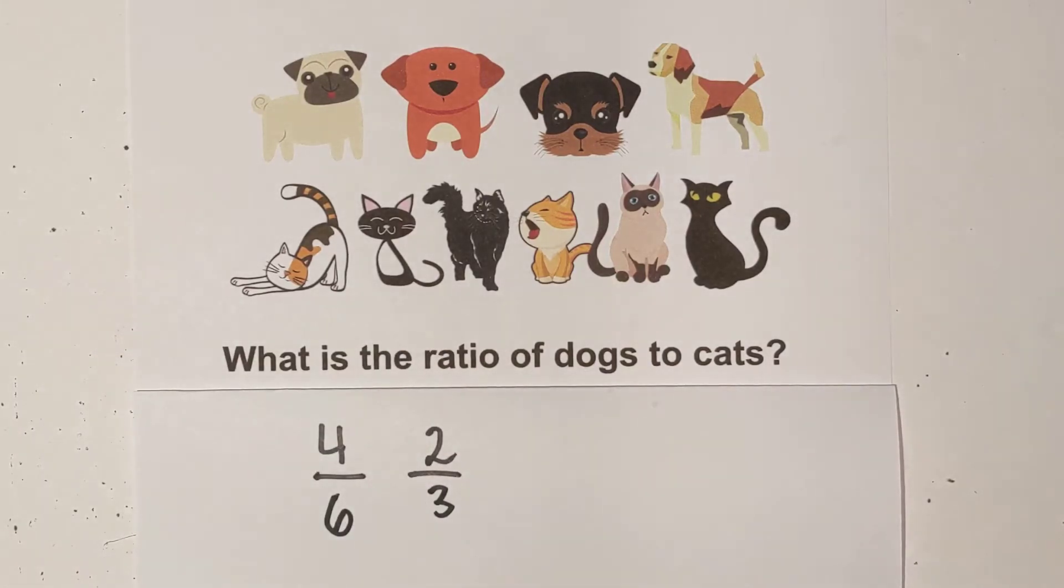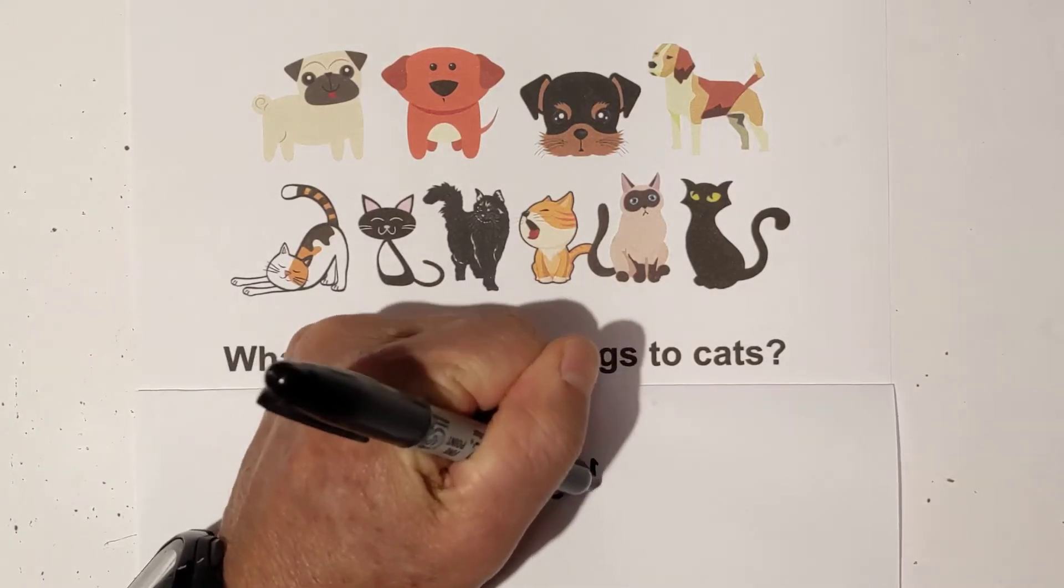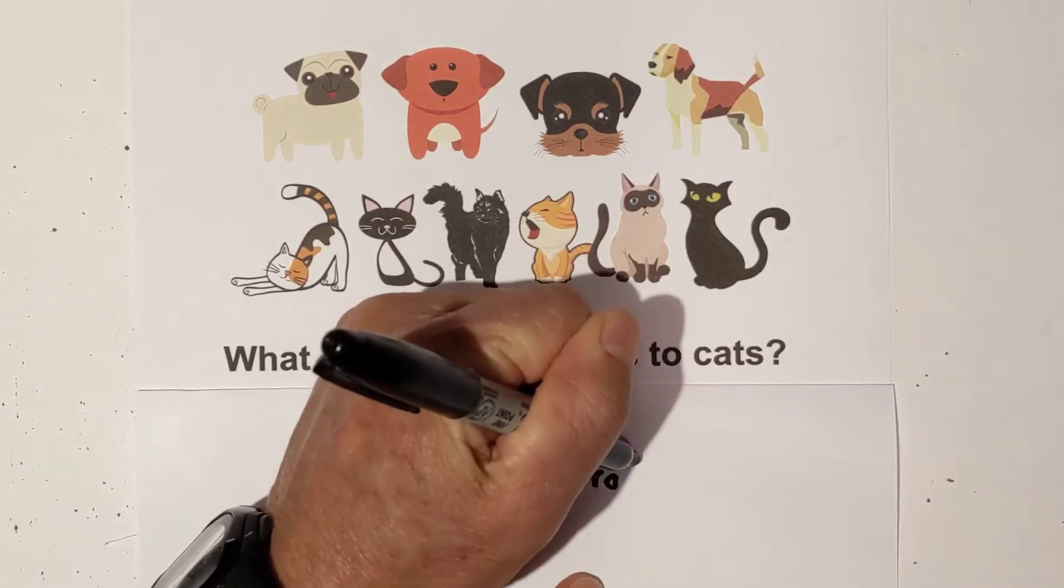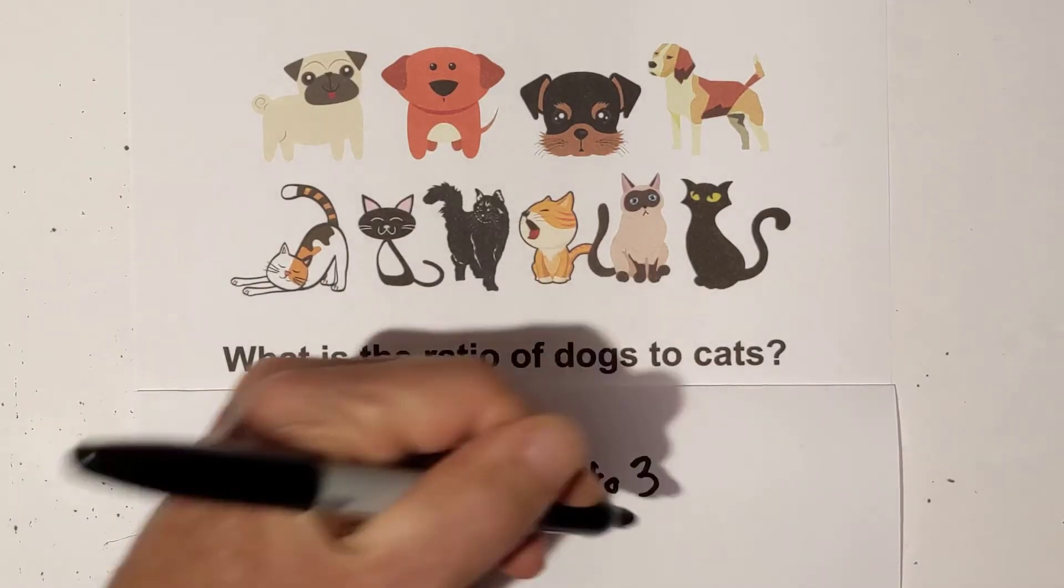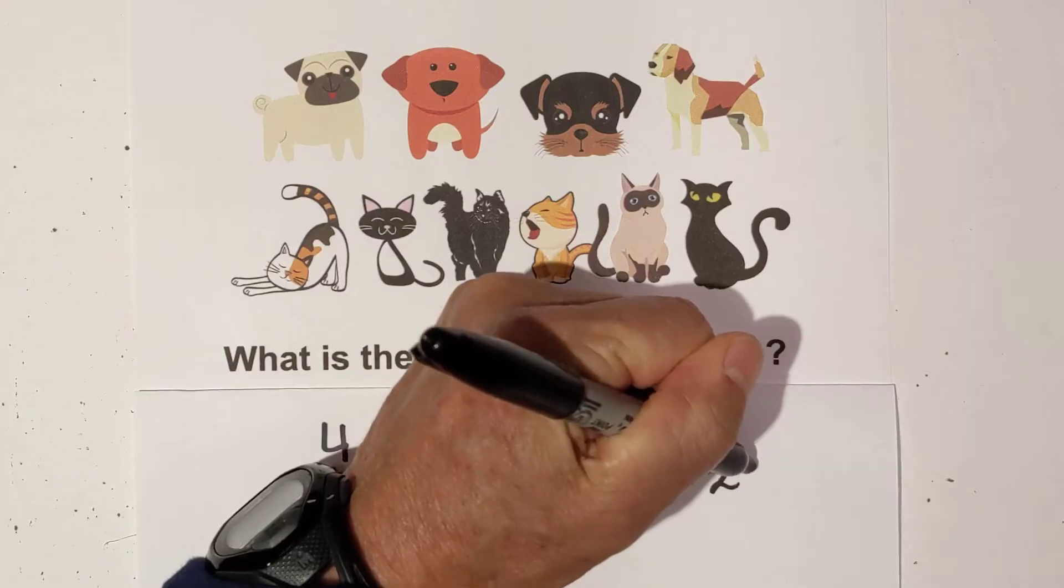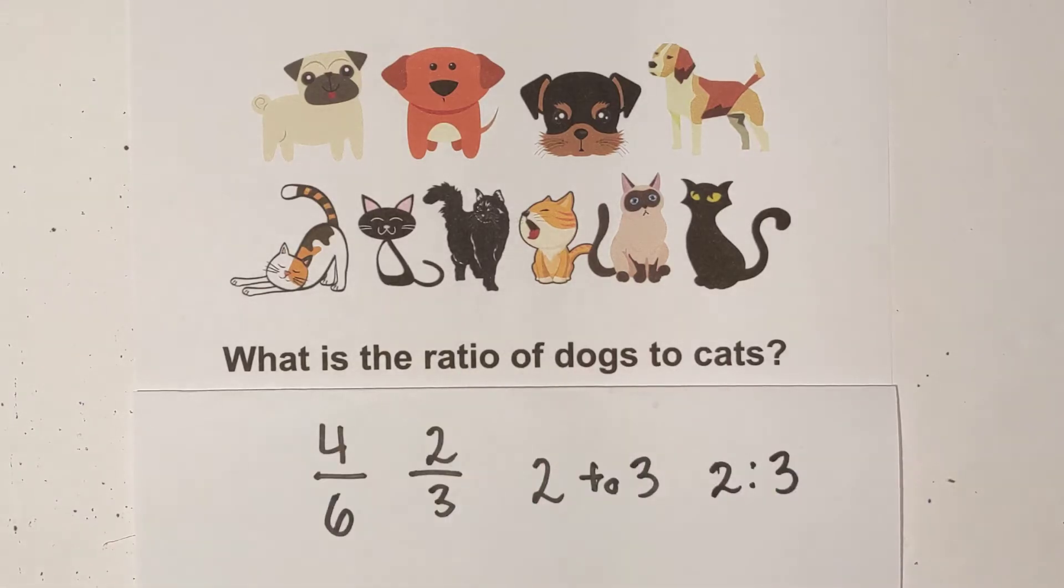So there's a couple ways you can write a ratio. It is 2 to 3, or you can write it literally 2 to 3, or you can write it with a colon 2:3. So there would be the ratio of dogs to cats. Let's take a look at another one.